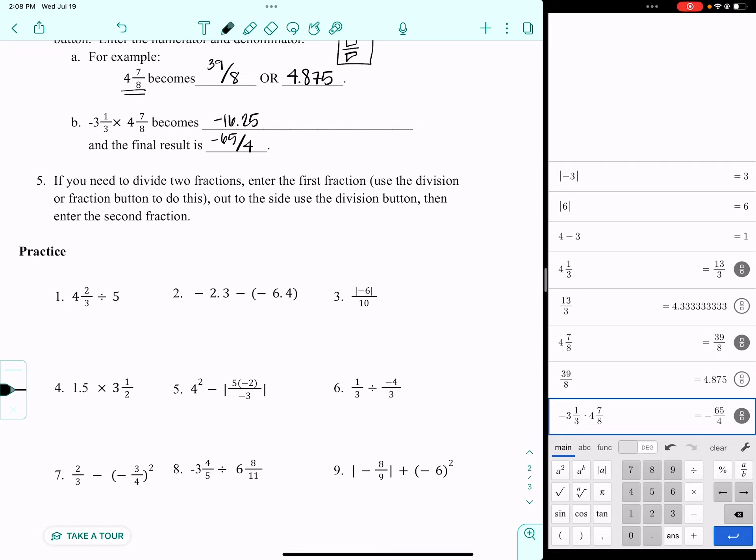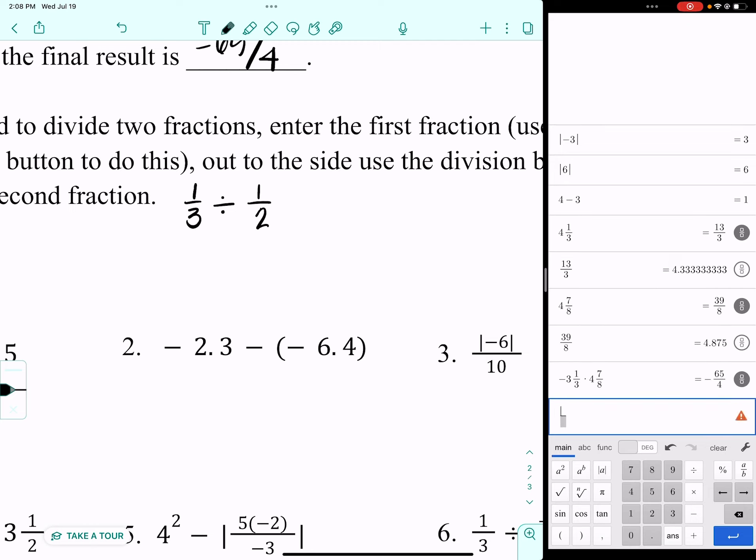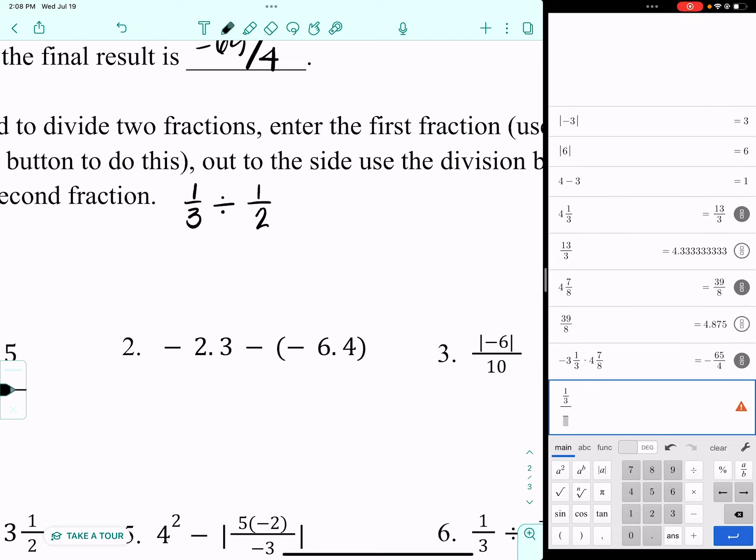If you need to divide two fractions, you enter the first one, use the division or the fraction button to do it, and then out to the side, use the division button and enter the second fraction. That sounds ridiculously confusing, so here's what we're going to do. Let's look at what one-third divided by one-half would look like. I'm going to start with my fraction button and enter the one-third. Then out to the side on that main line, I'm going to divide, and then hit the fraction button again and put in the one-half. That's what it would look like. When you plug it into Desmos, it ends up looking a little bit intimidating, sort of a compound fraction, but it's not a big deal. Desmos has your back.